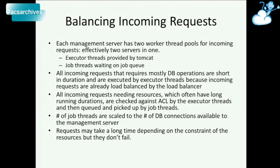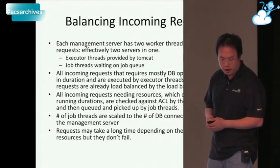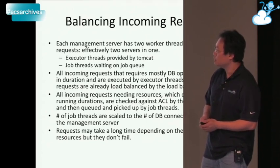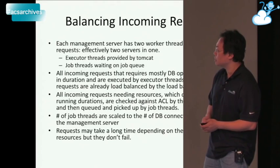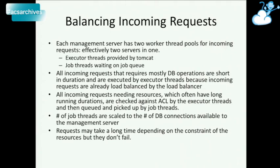But if the incoming request needs physical resources, these usually have long running durations and require a lot more DB resources. What we do is check it against ACL, make sure the requester can actually execute that request, and then queue it into the job management layer, which today is backed by a database queue. It gets picked up by job threads, and in multiple management server cases those job threads are spread across the management layer — whoever has free threads will pick them up.